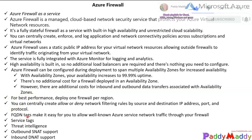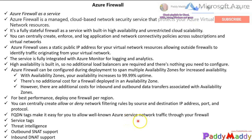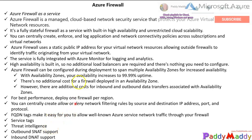For better performance, deploy one firewall per region. You can centrally create and load any networking rules by source and destination IPs, ports, or application protocols. You can also use FQDN tags which make it easy to manage known rules when creating network traffic through your firewall. Service tags can be applied and built-in threat intelligence can be enabled for alerting or blocking - all of which we'll look at in the upcoming demo lecture.